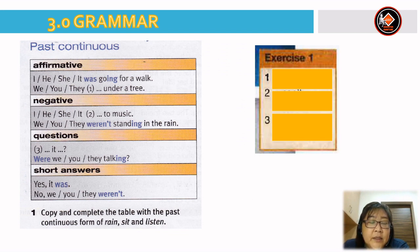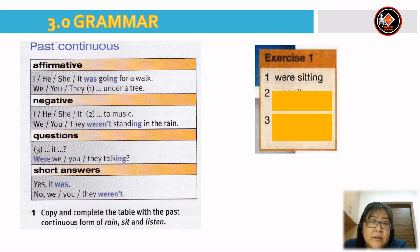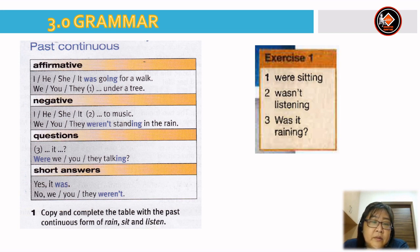Let's look at more sentences. I/he/she/it was going for a walk. We/you/they were standing under a tree — or were sitting under a tree. For negative: I/he/she/it wasn't listening to music. We/you/they weren't standing in the rain. For questions: Was it raining? Were we/you/they talking? Short answers: Yes, it was. No, we/you/they weren't. You can copy and complete the table with past continuous forms of rain, sit, listen, or other answers.